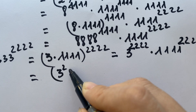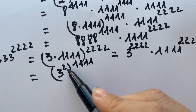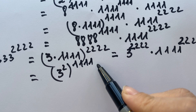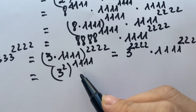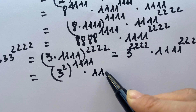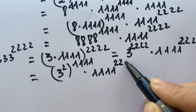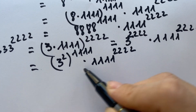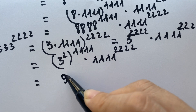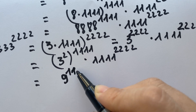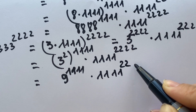We can write 3^2222 as (3^2)^1111 because 2 times 1111 equals 2222. And 3^2 equals 9, so this becomes 9^1111 times 1111^2222.